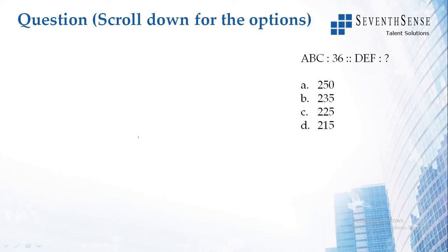The pattern for this given analogy is A plus B plus C. The position of A is 1, position of B is 2, and the position of C is 3. So 1 plus 2 plus 3 is equal to 6.